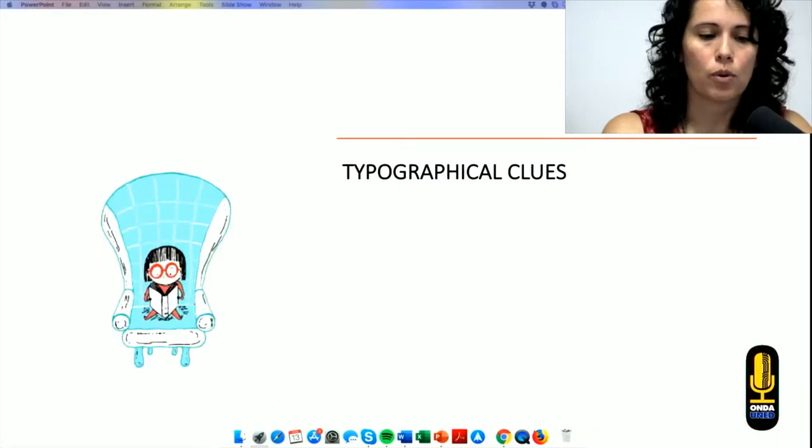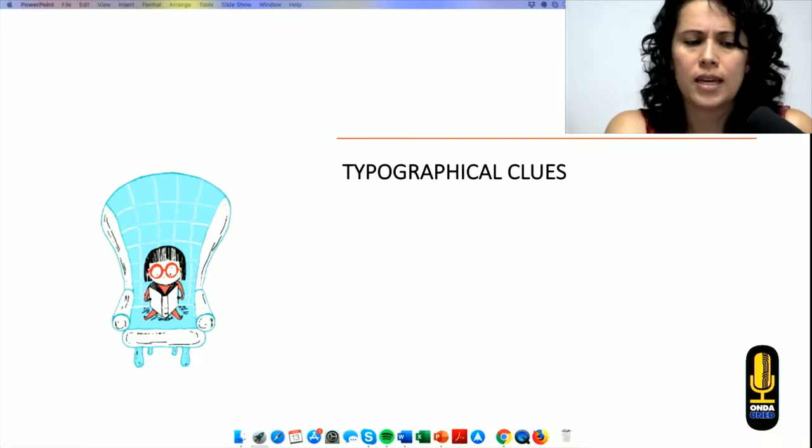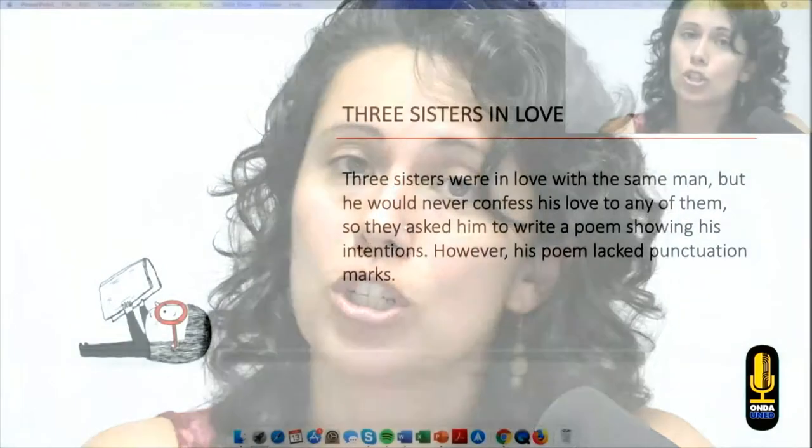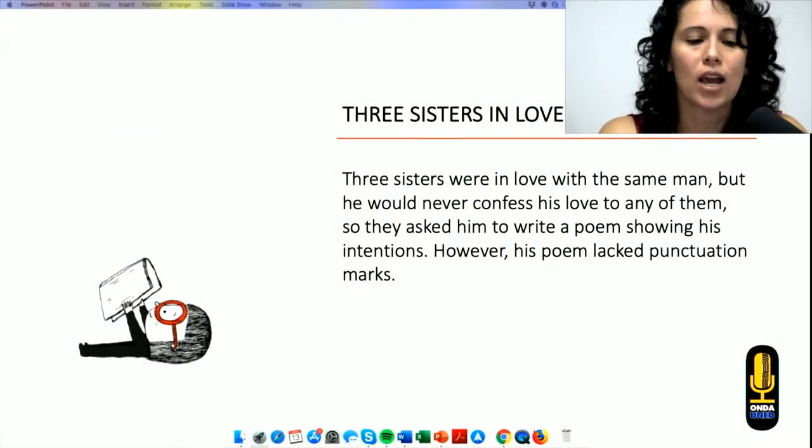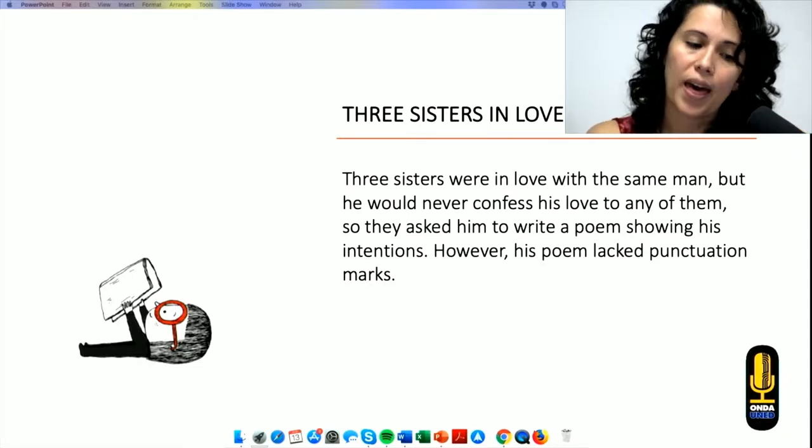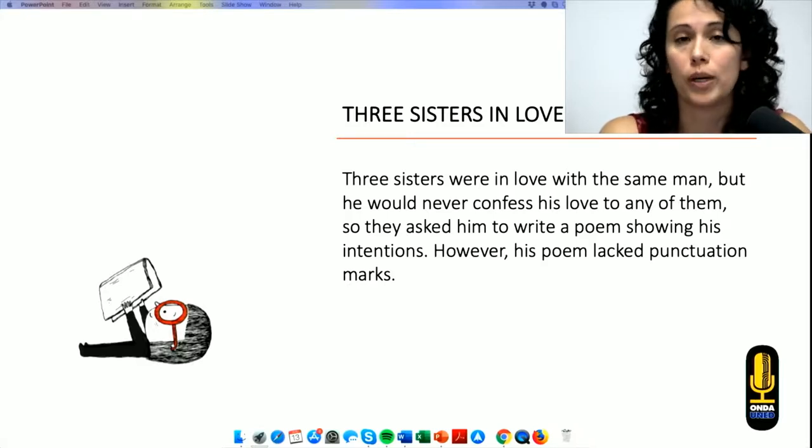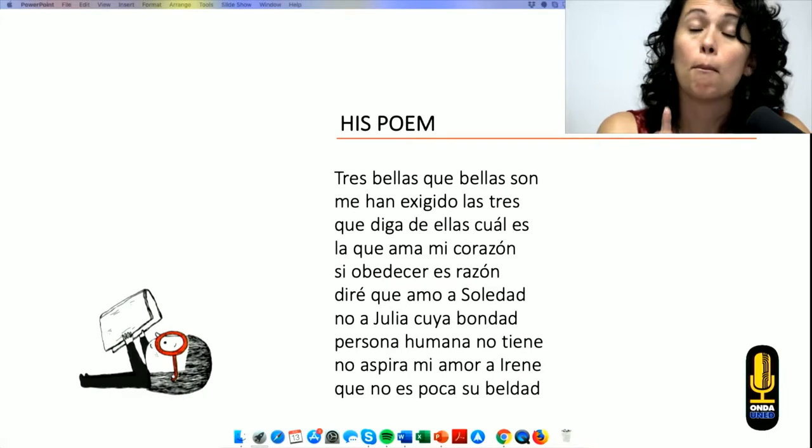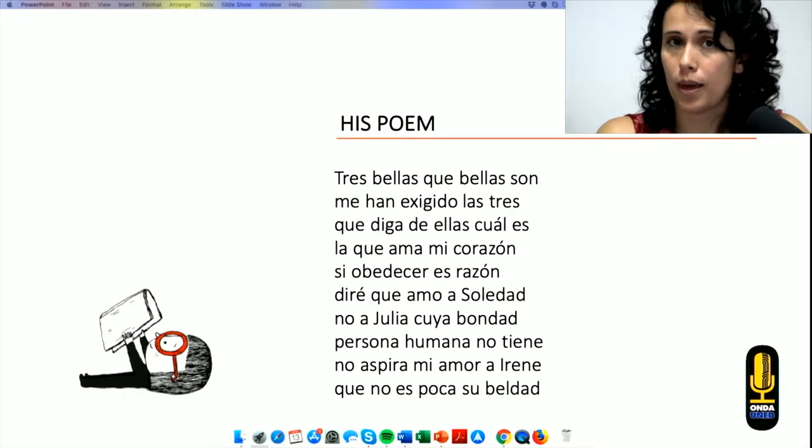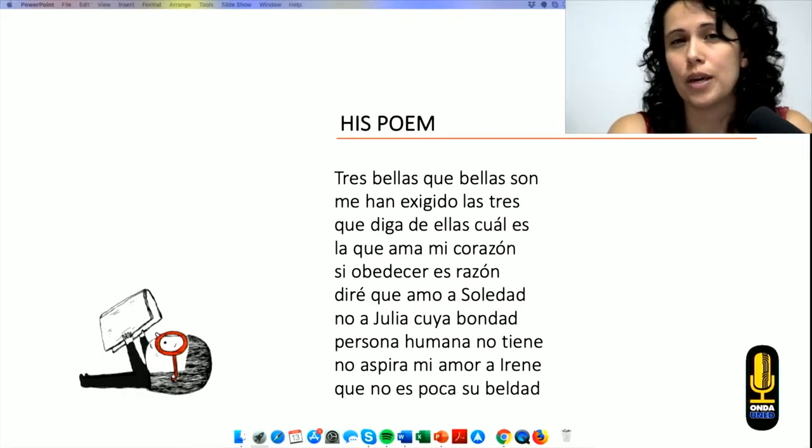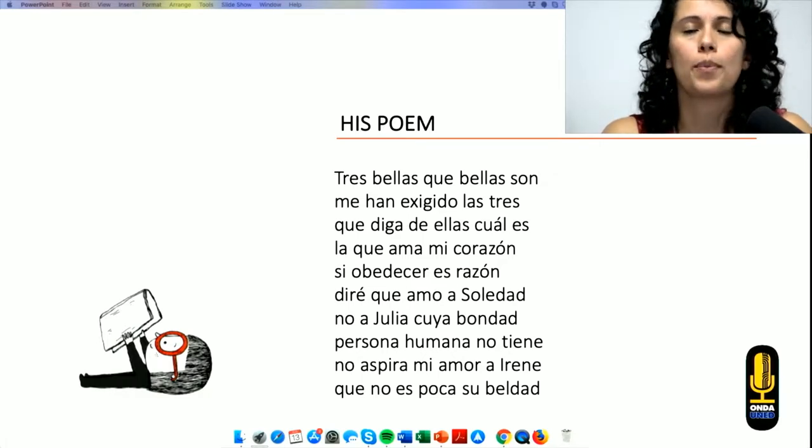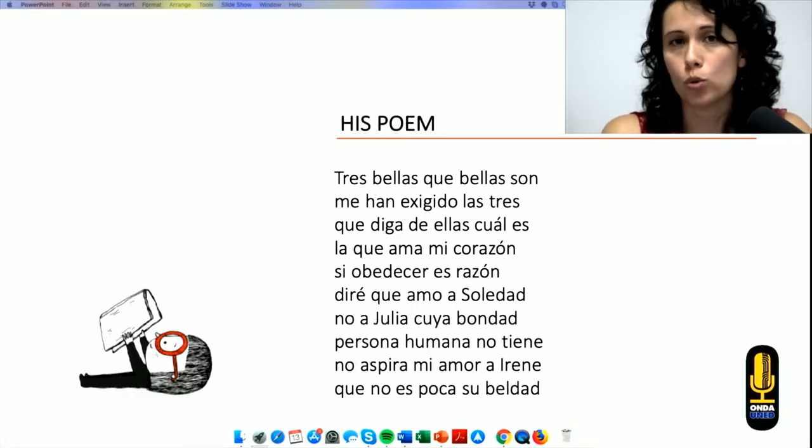Now we are going to move to the typographical clues. For this topic, we decided to do an activity. It's a story about three sisters that are in love. And the guy didn't say who he was in love with. So, what he did is that he wrote a poem. The problem with this poem is that he didn't use any punctuation marks. By the way, we also chose a poem in Spanish in order to tell you that it doesn't matter the language you're going to be working with. Typographical clues will always work in the same way.